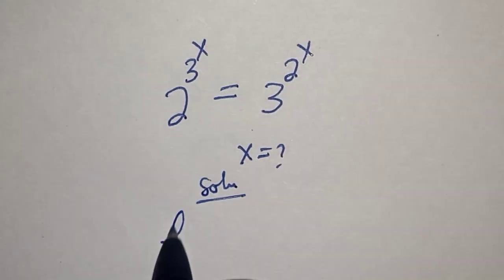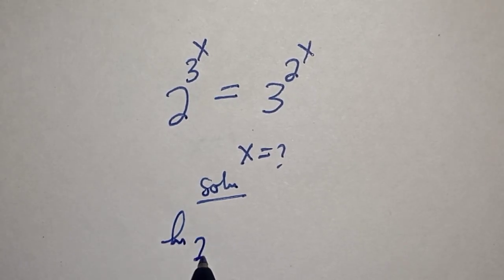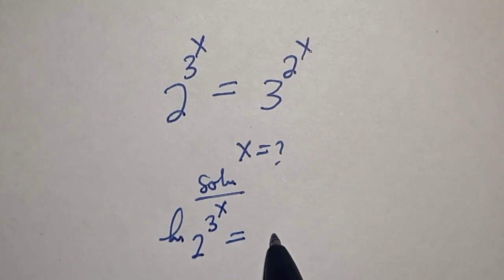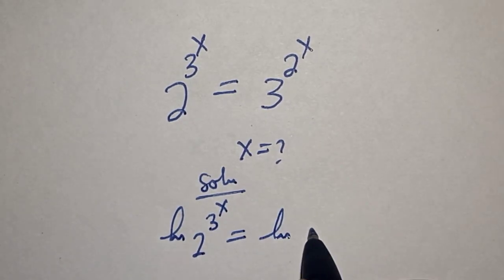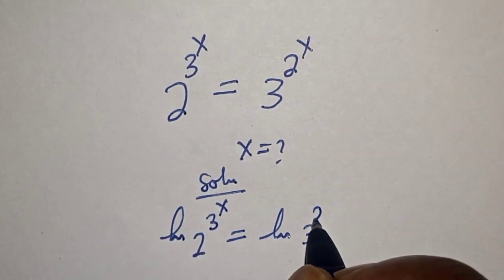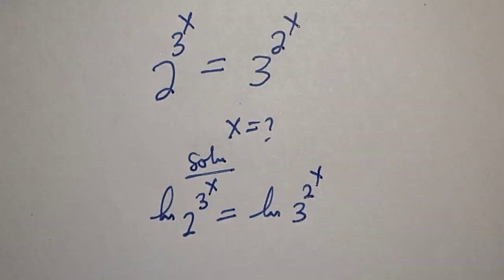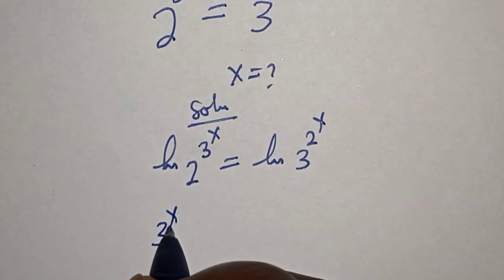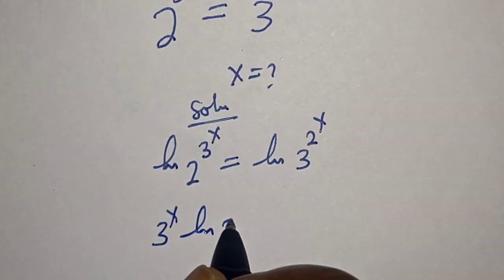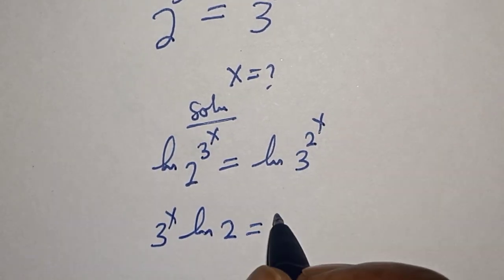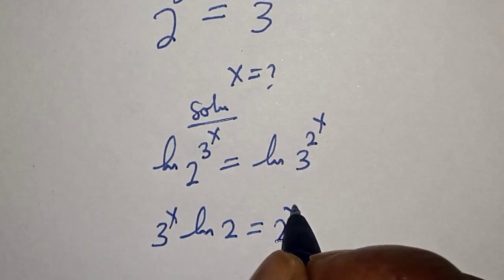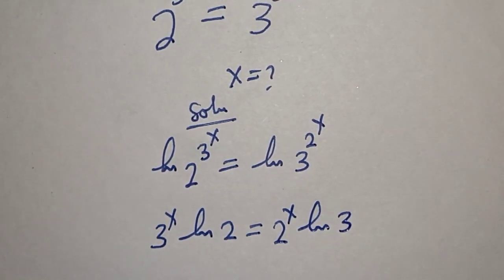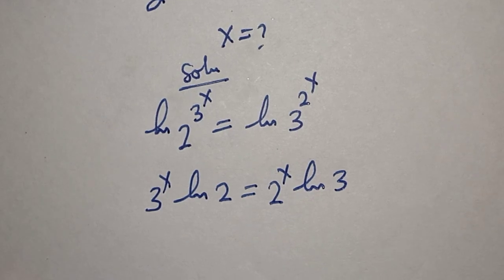That is: natural log of 2 to the power of 3 to the power of s is equal to natural log of 3 to the power of 2 to the power of x. Then this gives us 3 to the power of x times natural log of 2 is equal to 2 to the power of s times natural log of 3.